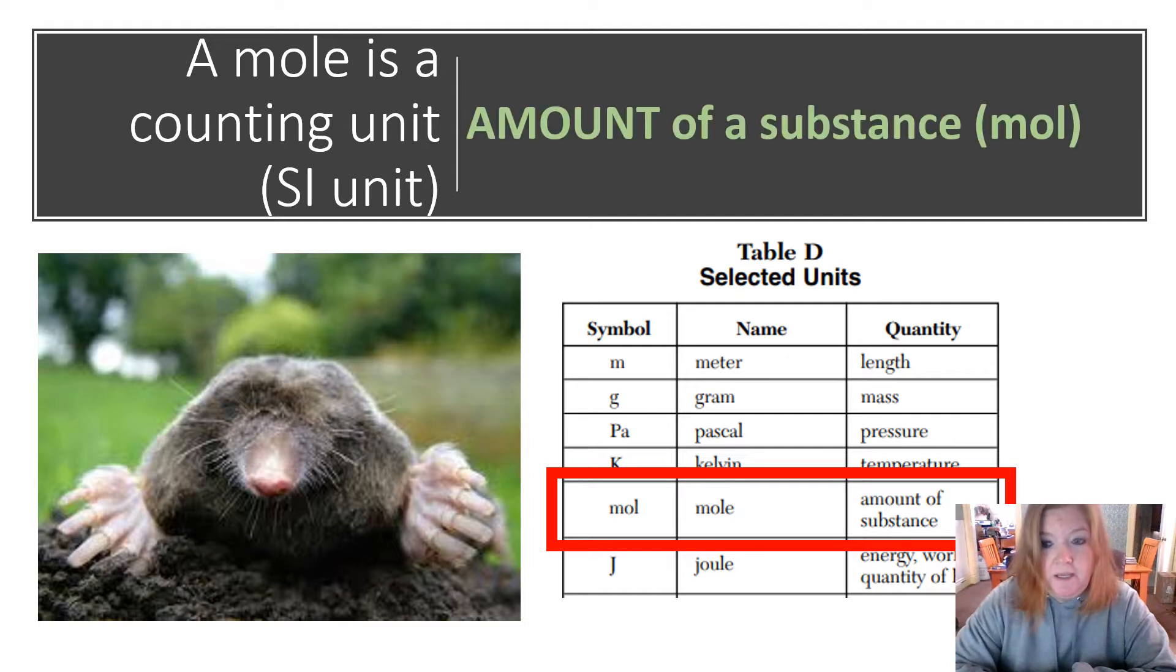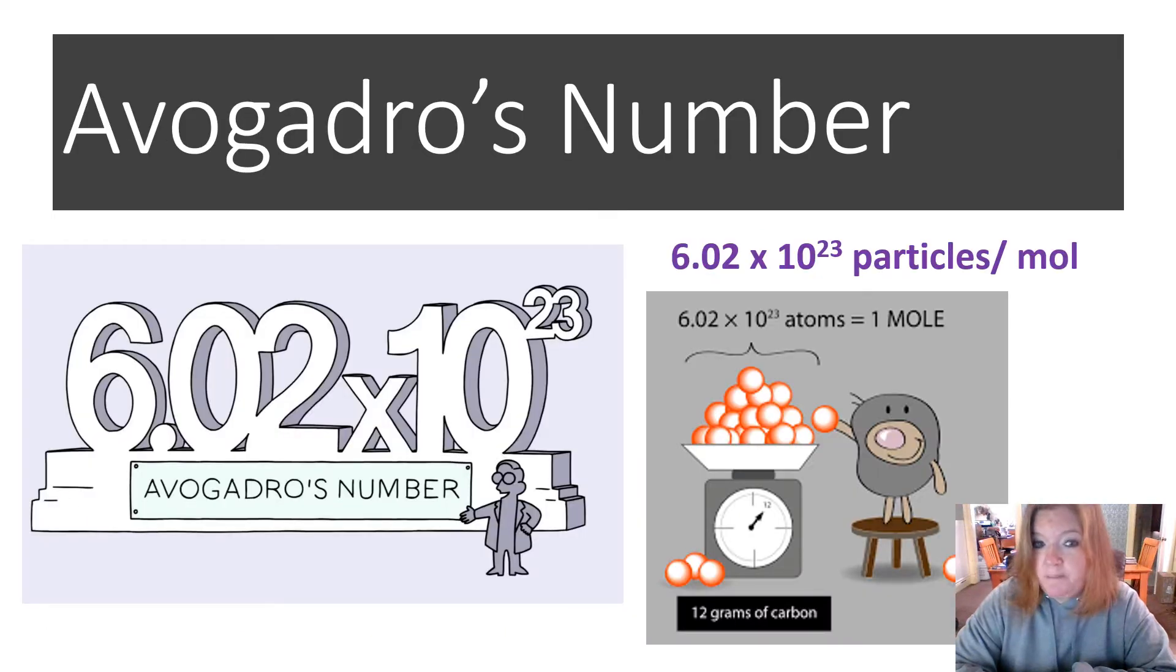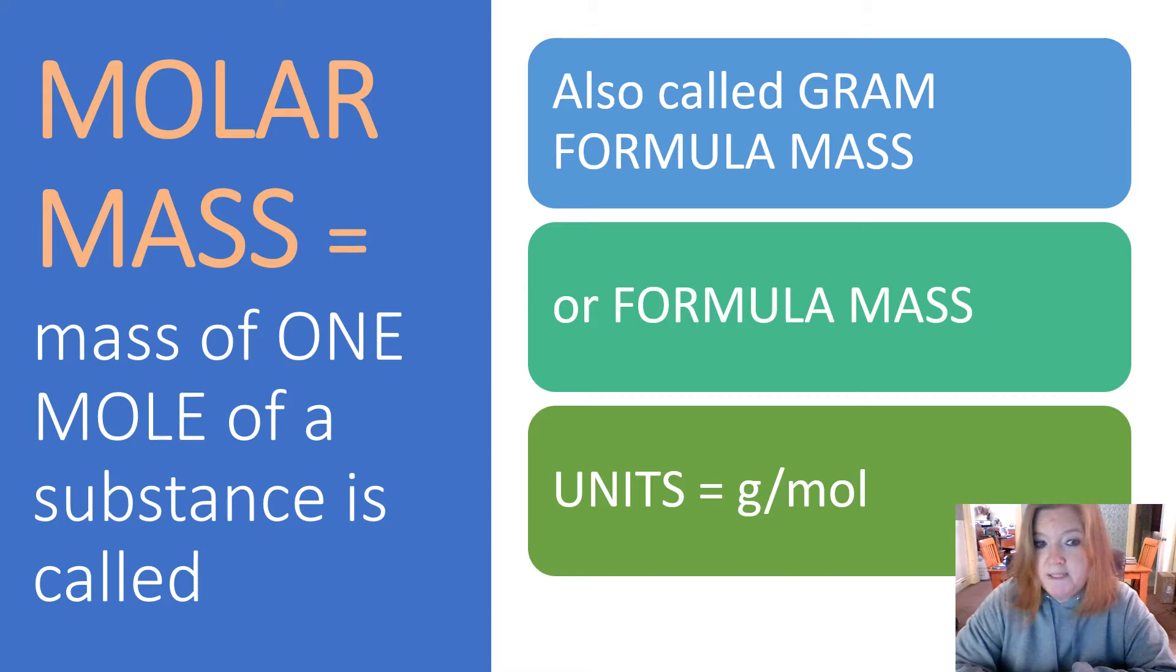Avogadro's number, 6.02 times 10 to the 23rd, means the number of particles in one mole. Molar mass, that's what we call the mass of one mole of a substance.